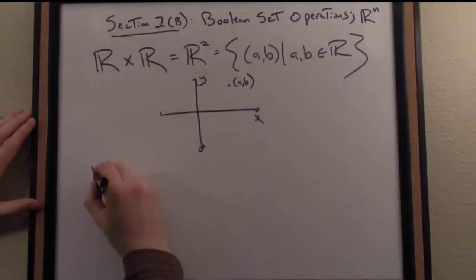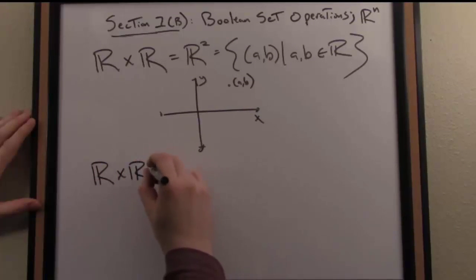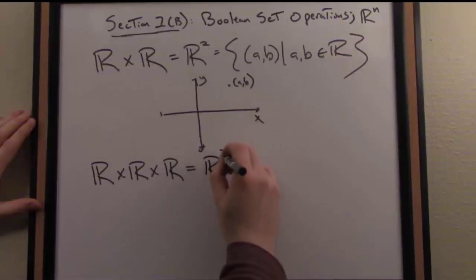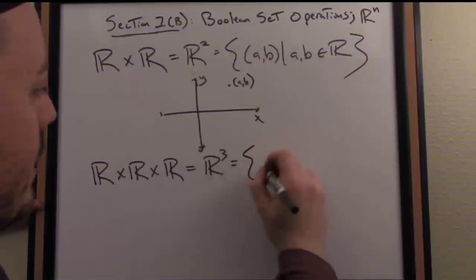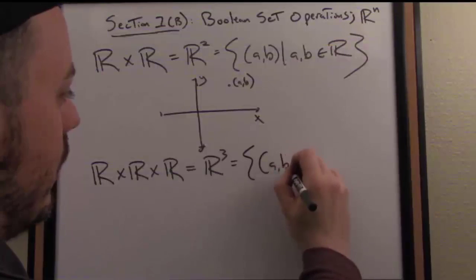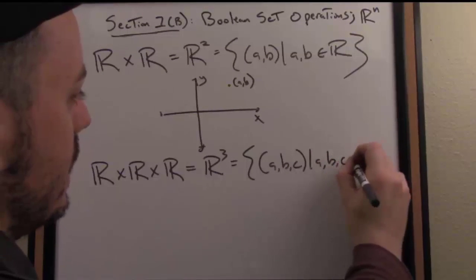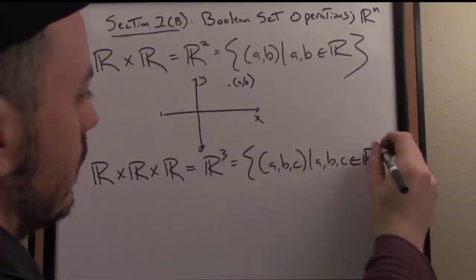Similarly, if I take the product of R with itself three times, the three-fold product of R, I get R³, as it's usually referred to. And by definition, once again, that's the set of all triplets A, B, and C, where the coordinates here, A, B, and C, are each real numbers.